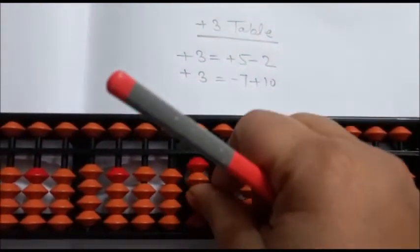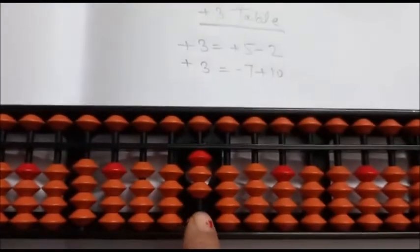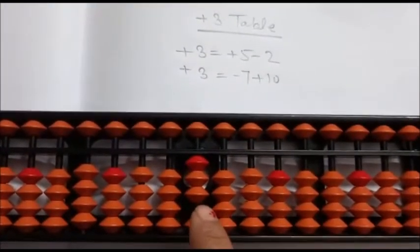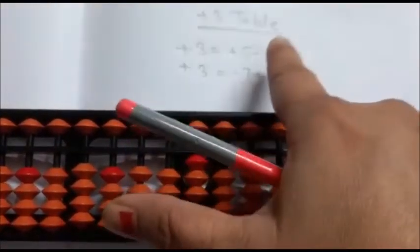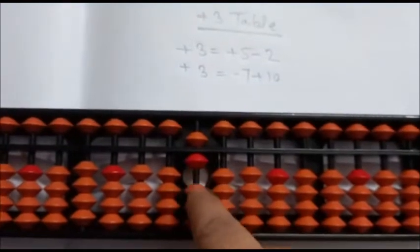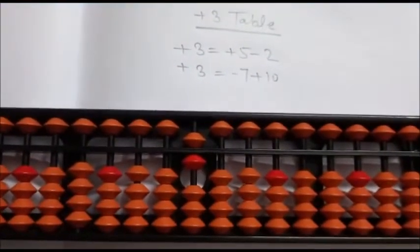Plus 3 in the ones place is direct — answer is 3. Again, plus 3 using the first formula: plus 5 minus 2 — answer is 6.